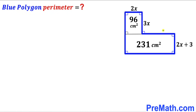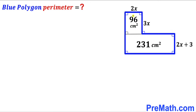In this video we have got a blue polygon that consists of two rectangles — the top rectangle and the bottom rectangle, as you can see in this given diagram. The area of the top rectangle has been given as 96 cm squared, whereas the area of the bottom rectangle is 231 cm squared.